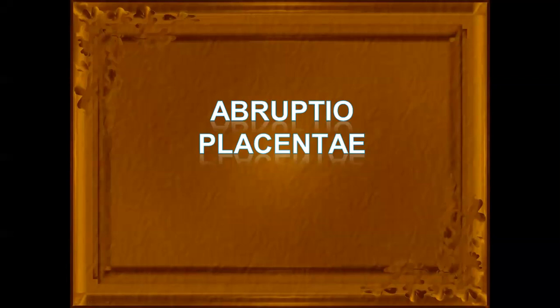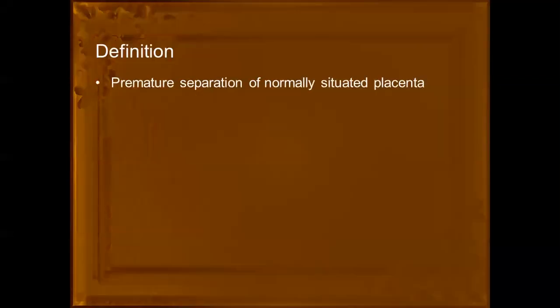So what is abruptio placenta? When the placenta is separating from its normal situation prematurely, we call it abruptio placenta. The normal situation of the placenta is in the upper pole of the uterus.